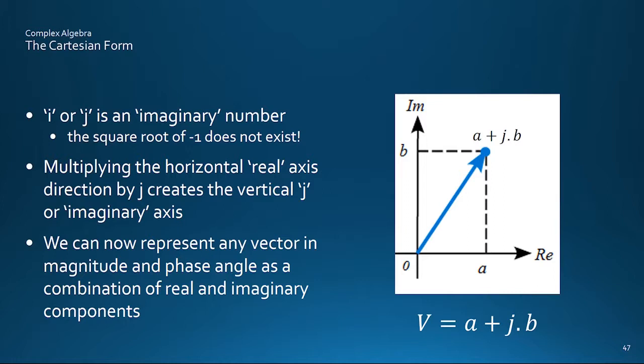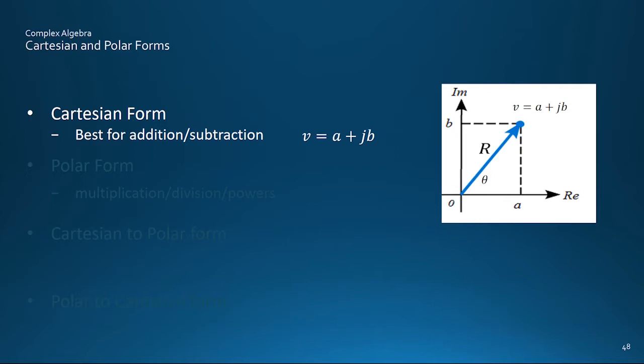So V equals A plus J B specifies the vector defined by the length A along the real axis and length B along the vertical. Admittedly, this is still the slight snag that square root of minus 1 doesn't exist, or well it didn't, but now it's been invented it turns out to be amazingly useful.